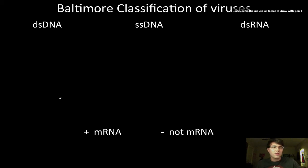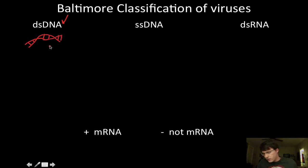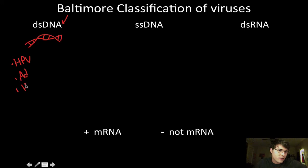Let's move on to the Baltimore classification of viruses. David Baltimore came up with this classification. Double-stranded DNA as a viral genome structure is faithfully replicated and much more stable than an RNA genome. Examples of this would be HPV, adenovirus, herpes, and polio.